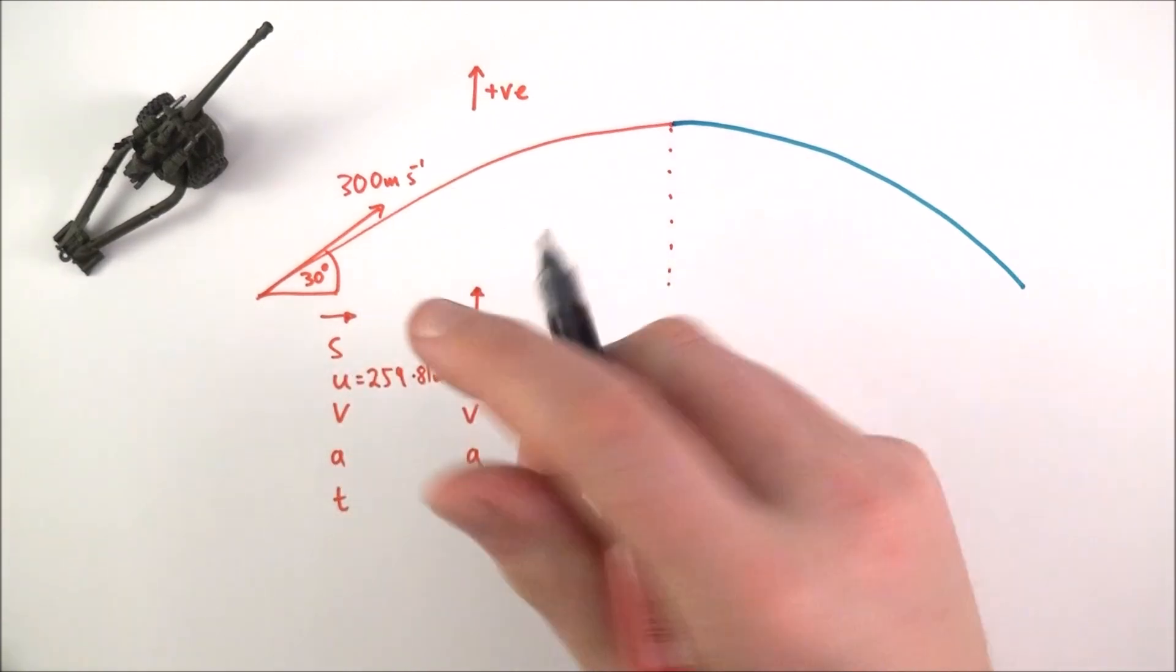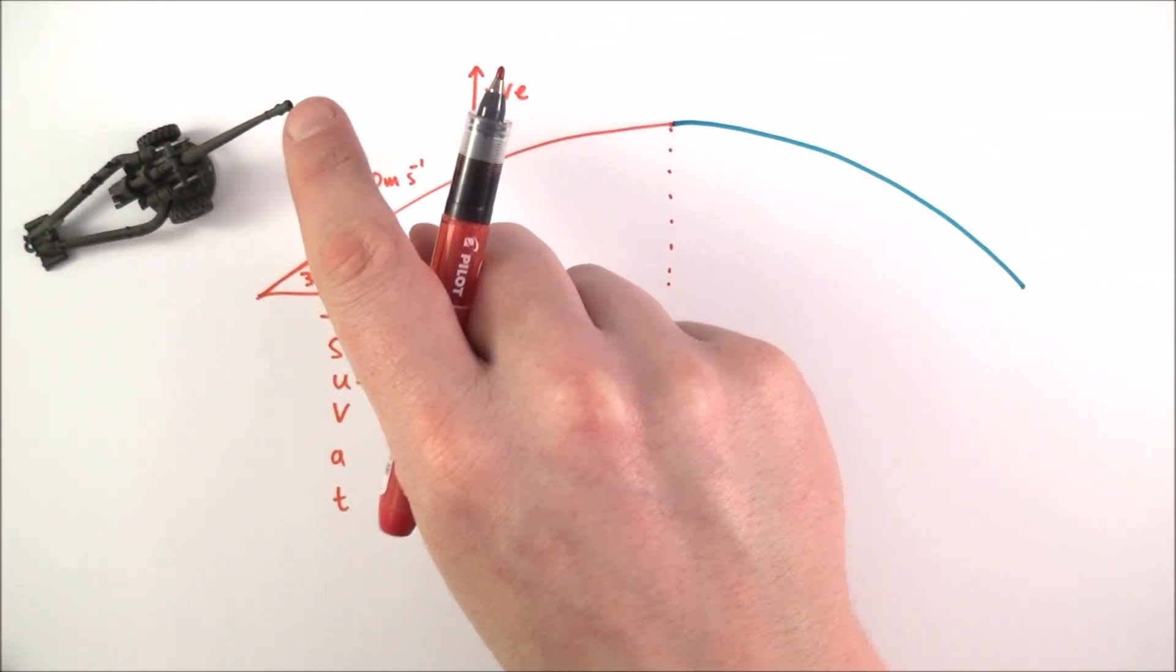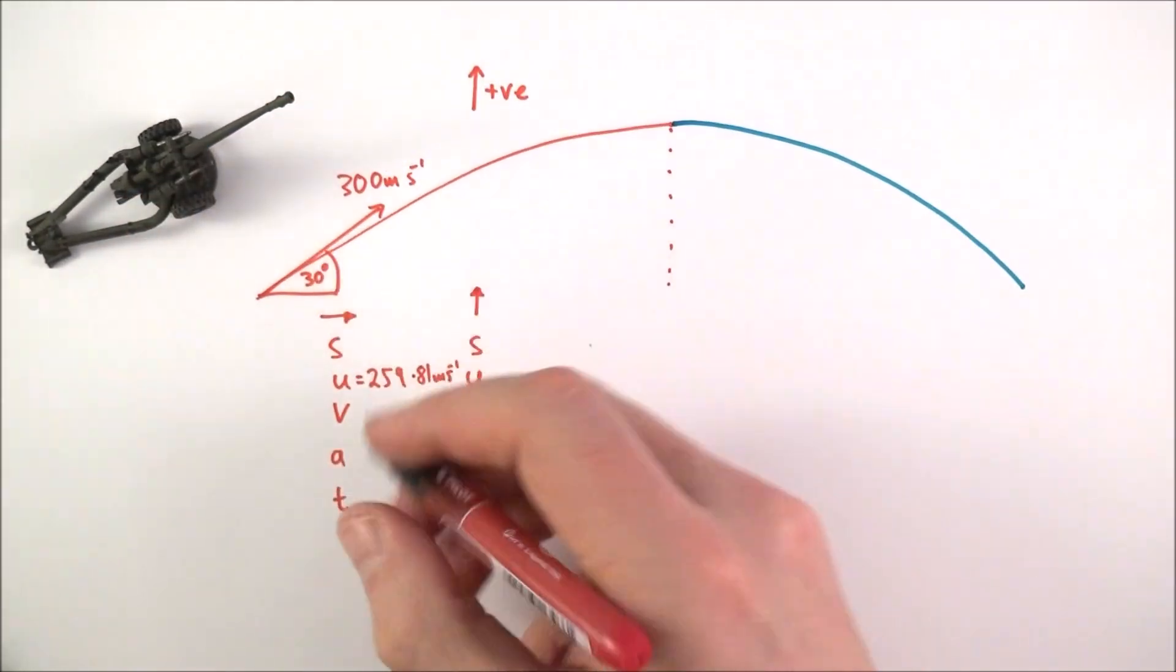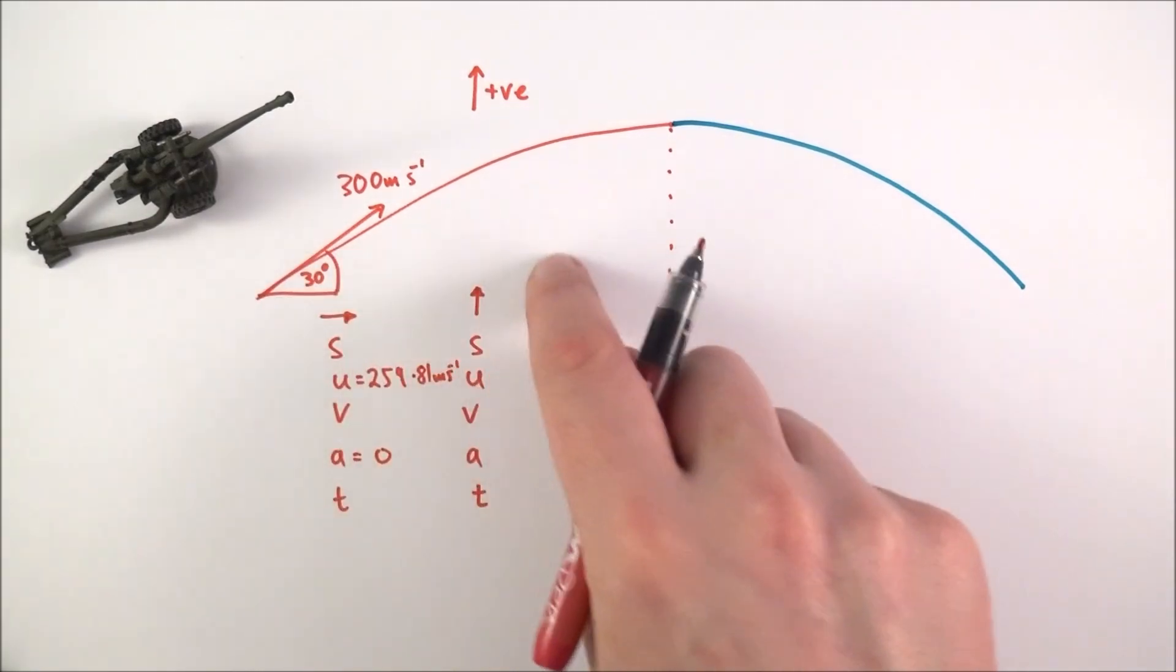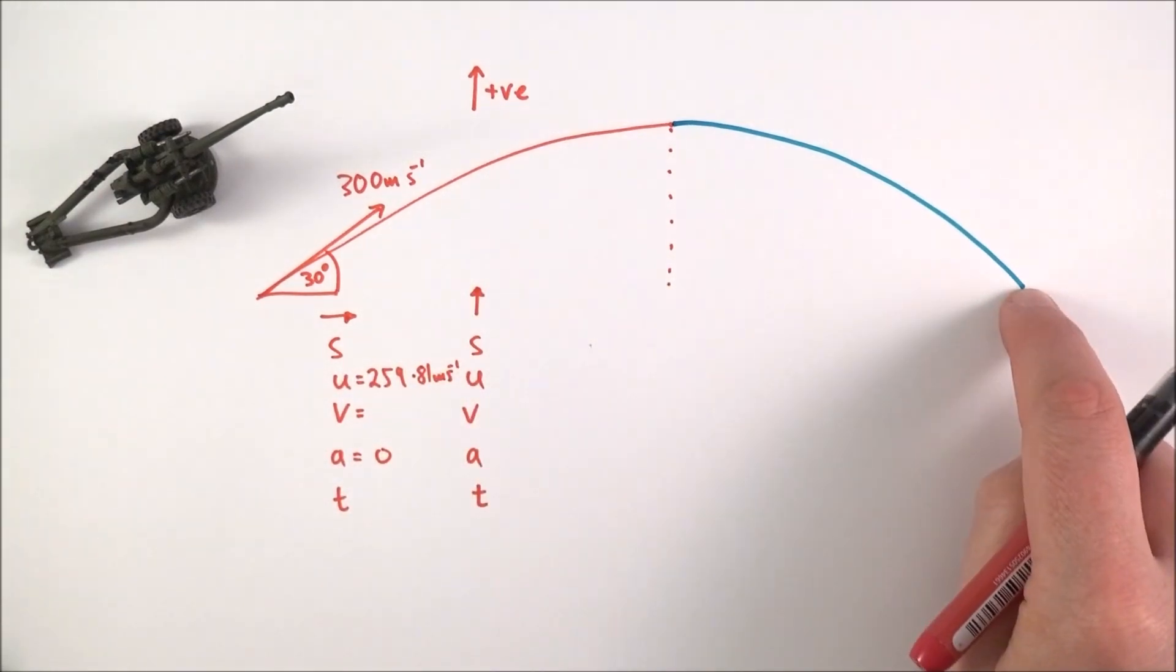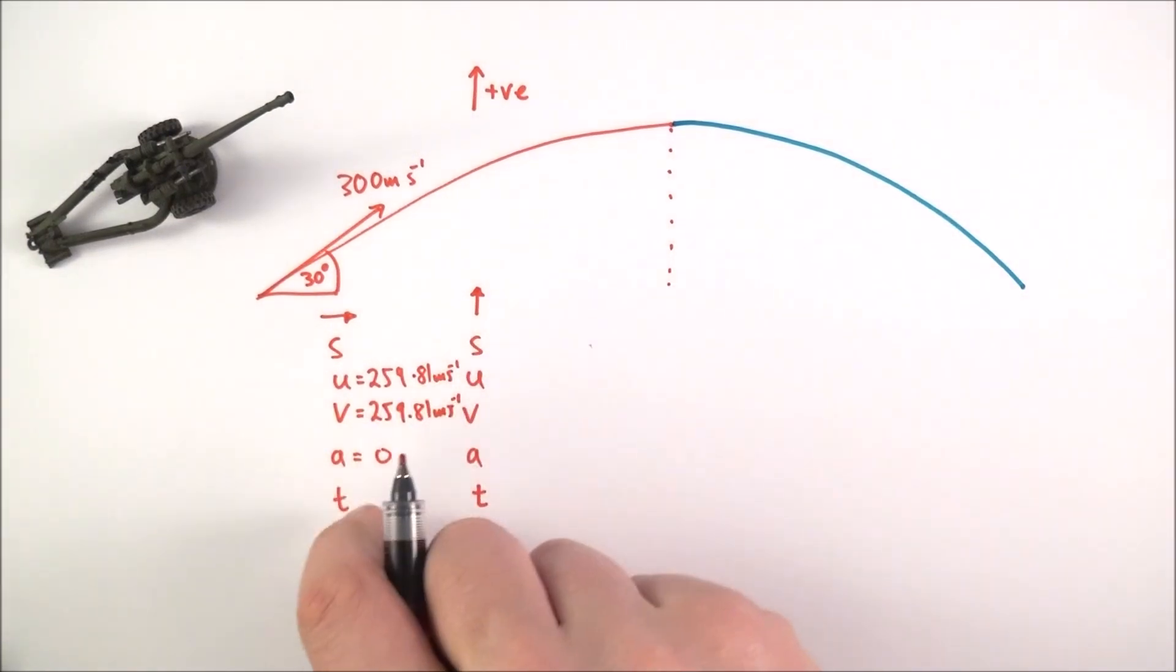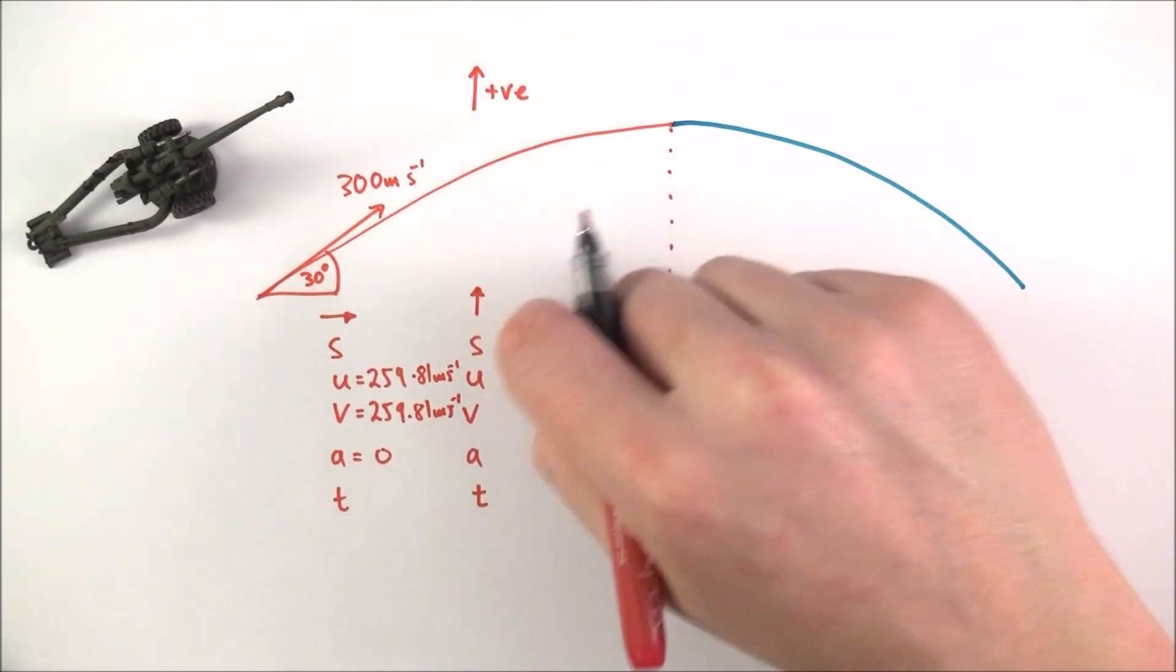This is the velocity of the projectile once it leaves the end of the barrel, not before it gets up to speed in the barrel, but from leaving the gun itself. If there's no acceleration in the horizontal direction, it's always going to have the same horizontal velocity. There's no acceleration, therefore its final velocity as it hits the target is going to be 259.81 meters per second, and that's all I know at the moment.